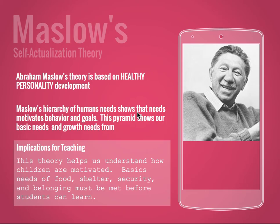Abraham Maslow's self-actualization theory is based on a social theory of healthy personality development. He created a pyramid that shows a hierarchy of human needs, explaining what will motivate an individual's behavior and their goals. It starts with the basic needs at the bottom and moves into the growth needs leading to self-actualization.